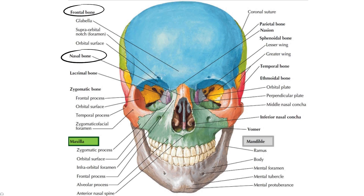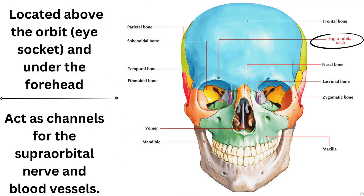Located above the orbit — your eye socket — and under the forehead is the supraorbital notch, also referred to as the supraorbital foramen, through which the supraorbital nerve and blood vessels will exit.